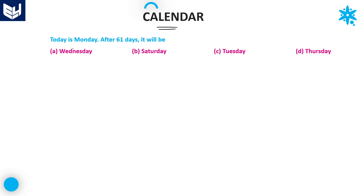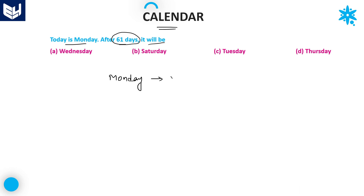Let's see the first question. Today is Monday — let us suppose that today is Monday. After 61 days, what day will it be? To solve this, given that today is Monday, we can assume that Monday is called as zero.